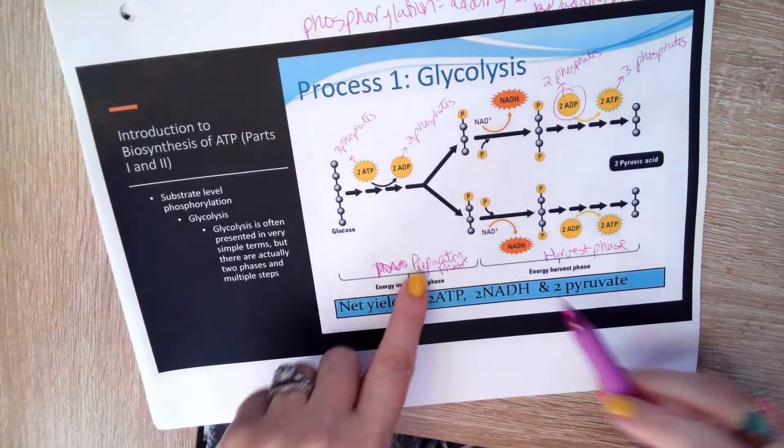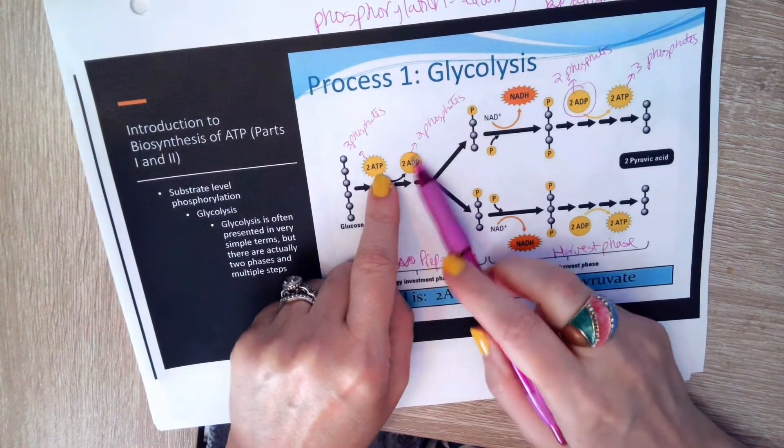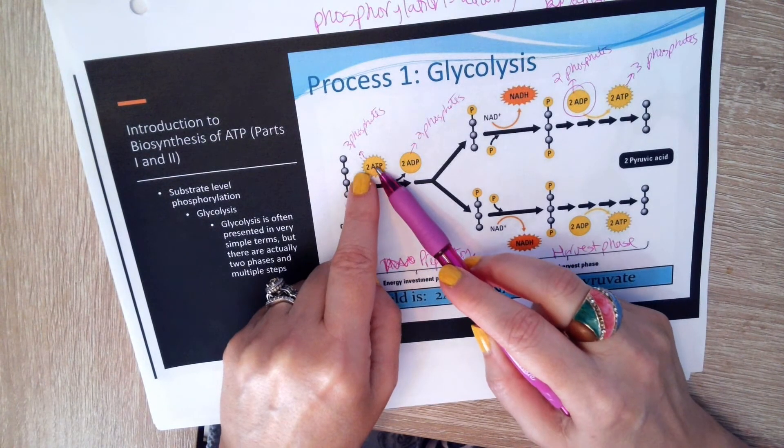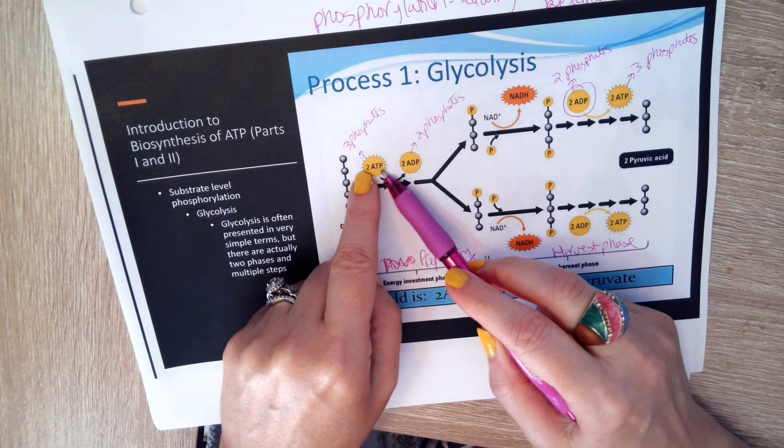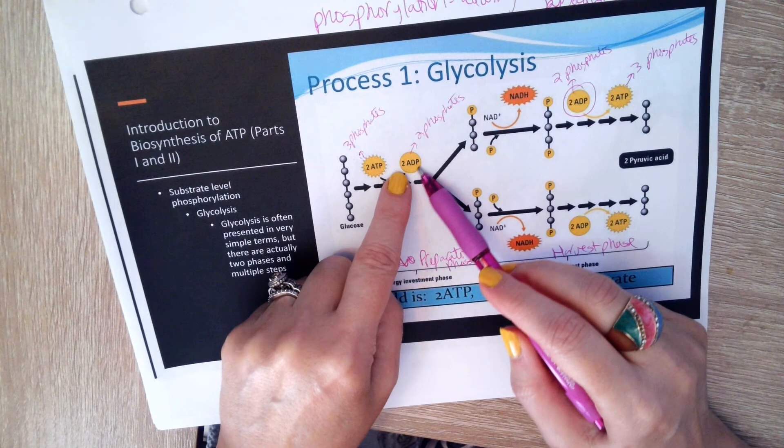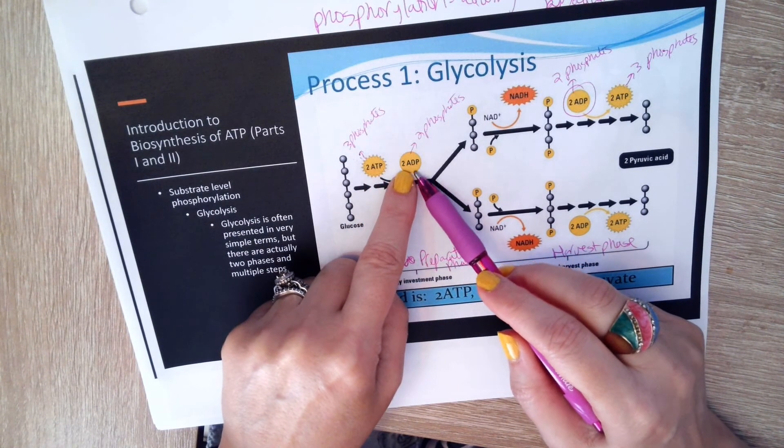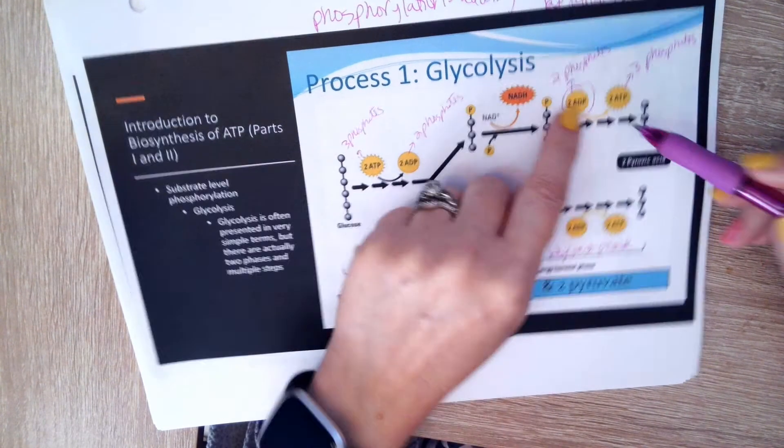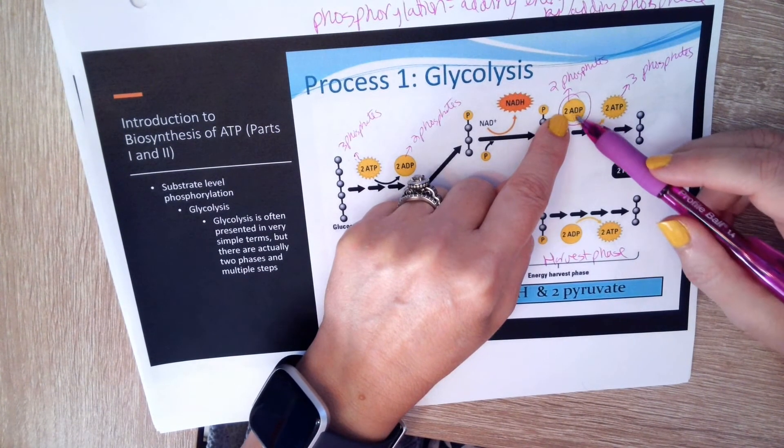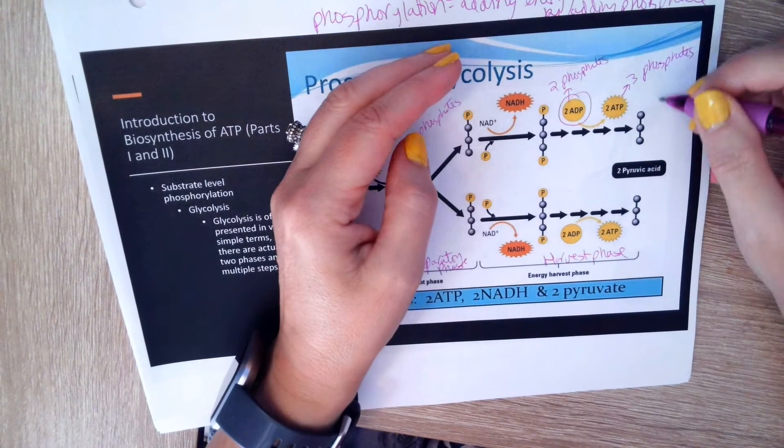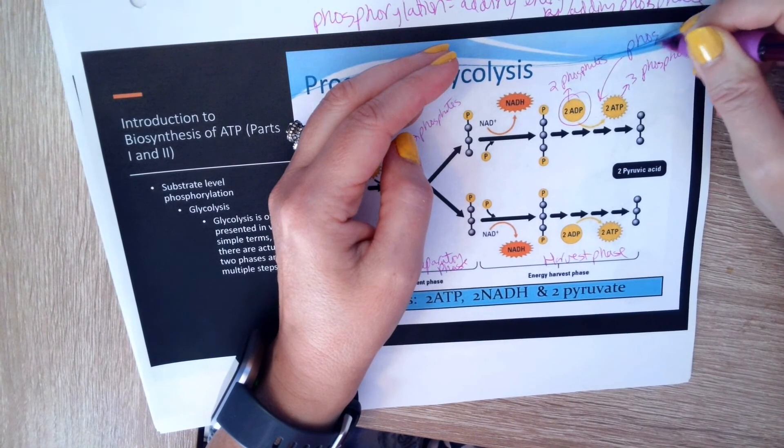So you can see in the preparatory phase you're using energy. You're taking a phosphate away from this high energy compound and resulting in this not high energy compound, whereas over here in the harvest phase, you're getting, you're adding the energy to this. You're phosphorylating, so phosphorylation happens there.